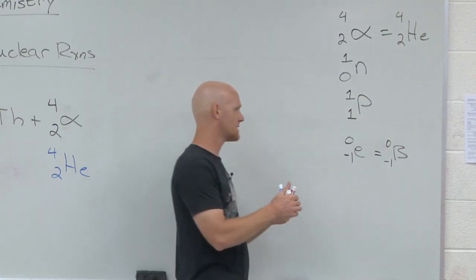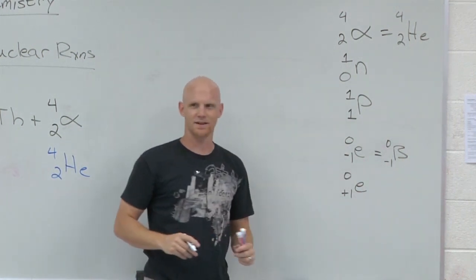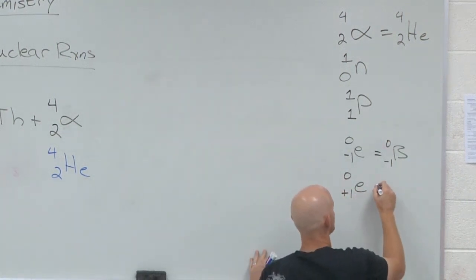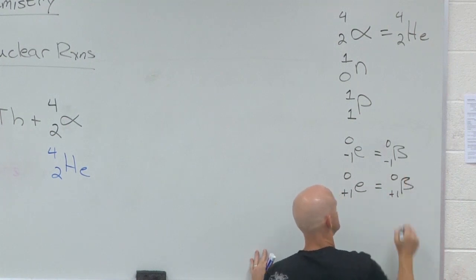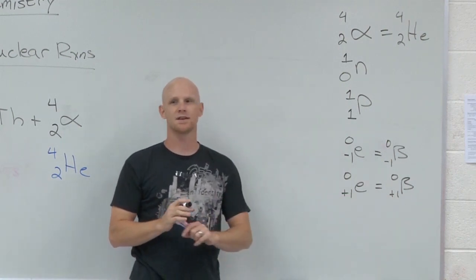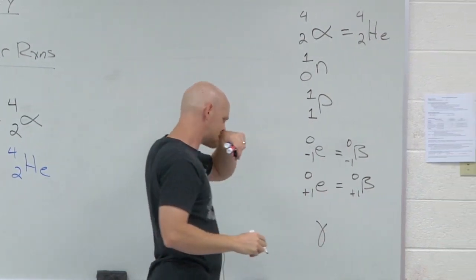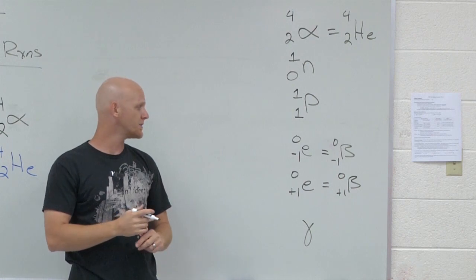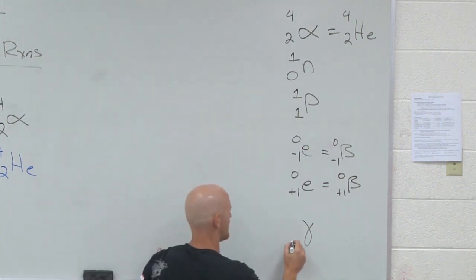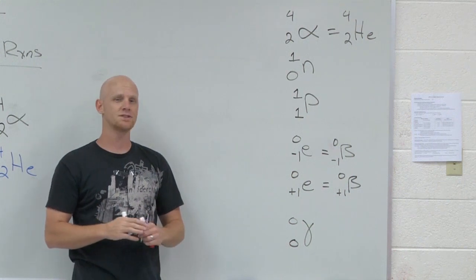We also come up with something new here. What is this thing? Yeah, it's your positively charged electron. We call it a positron. And it also could be symbolized with a beta as well, but with a plus charge instead of a minus charge. Cool. Then you got your gamma. And this is not a particle, though. This is a gamma ray. What is it? Zero, zero. Yeah. This thing really does have zero mass and zero charge. It's just light. It's really high energy electromagnetic radiation.